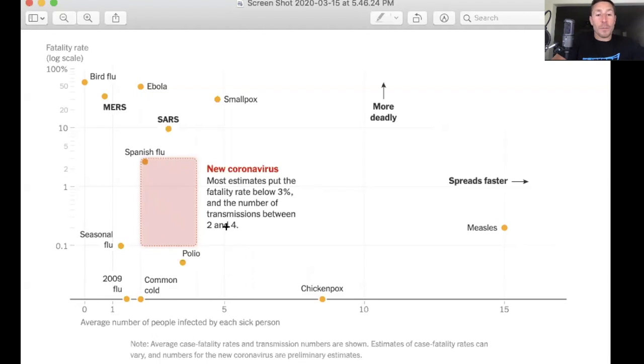...which is from the New York Times, again I'll link to it, it's on my Instagram. This pink box is where we think coronavirus might land. And so we don't know the actual fatality rate. We're estimating 0.5 to 3, and I think that's a large range as a conservative estimate.